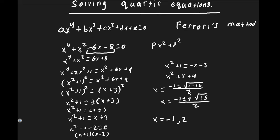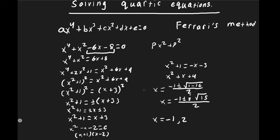Plugging x = −1 back into the original equation: (−1)⁴ + (−1)² − 6(−1) − 8 = 1 + 1 + 6 − 8 = 0. ✓ For x = 2: 2⁴ + 2² − 6(2) − 8 = 16 + 4 − 12 − 8 = 0. ✓ Both real solutions verify correctly.